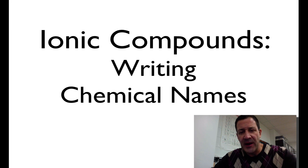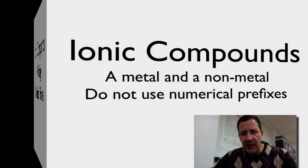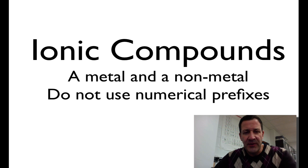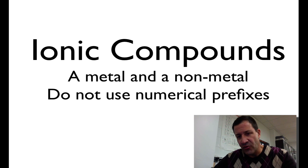In this video, I'm going to go over writing the chemical names for ionic compounds. You should remember that an ionic compound is made from a metal bonded to a non-metal. It's very important to remember that because they're ionic compounds, we do not use the numerical prefixes such as mono, di, tri, tetra, hepta — all those kinds of things. Those are only used in covalent compounds. So for ionic compounds: no numerical prefixes.